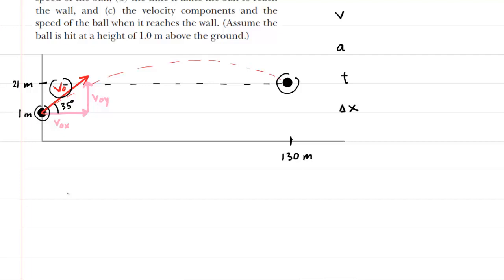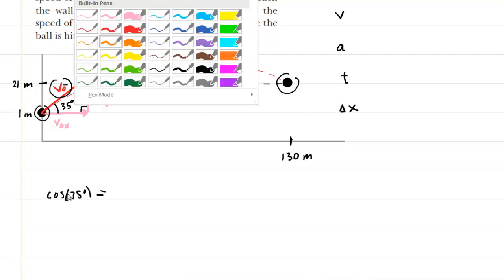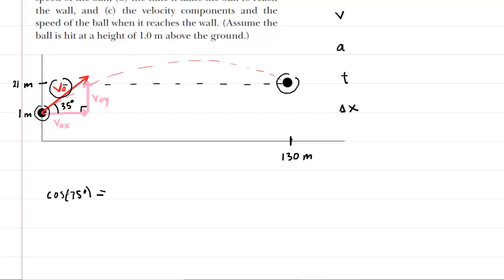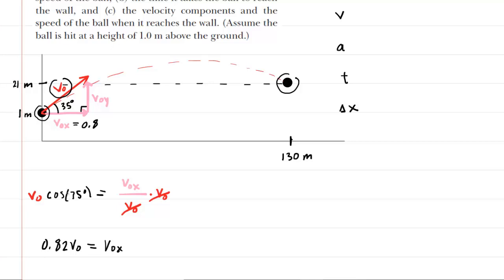From this right triangle, the cosine of the 35-degree angle equals the adjacent side — which is V-initial-x — divided by the hypotenuse, which is V-naught, the initial velocity. Solving for V-naught-x, we multiply both sides by V-naught. Computing cosine of 35 degrees gives approximately 0.82, so V-naught-x equals 0.82 V-naught. Let's label that accordingly in our picture.